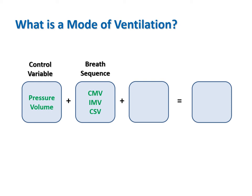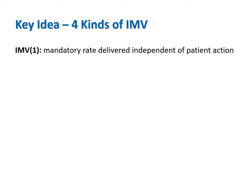Given that there are only two breath types—spontaneous and mandatory—there are only three possible breath sequences. One is all mandatory breaths, called continuous mandatory ventilation or CMV. In contrast, there could be all spontaneous breaths, called continuous spontaneous ventilation or CSV. If spontaneous breaths may occur between mandatory breaths, we call the sequence intermittent mandatory ventilation, or IMV.